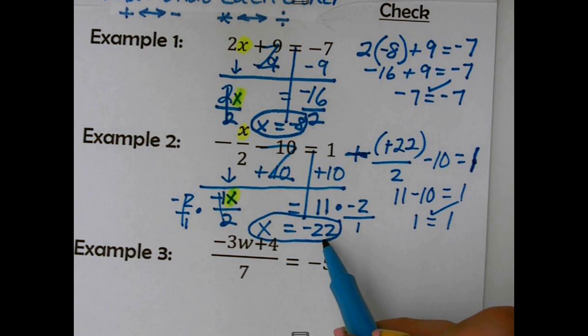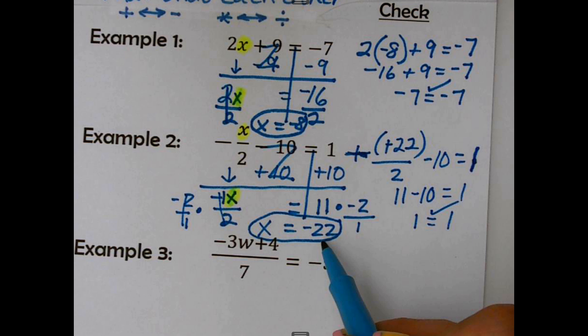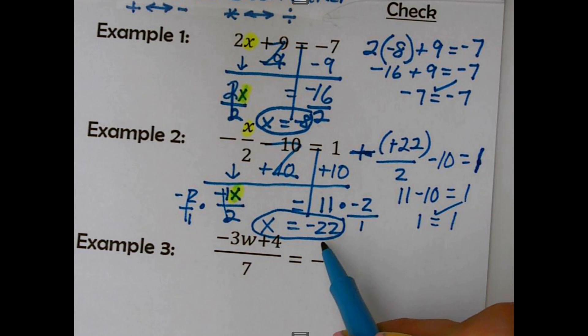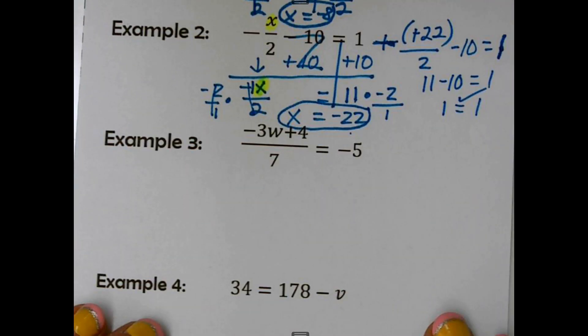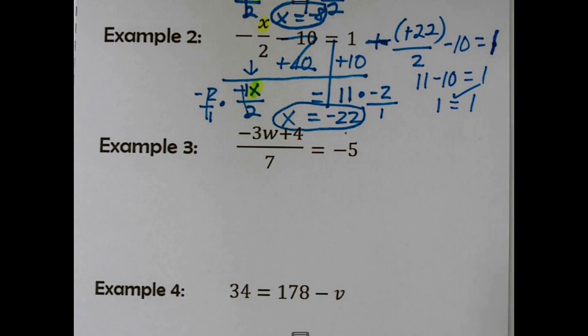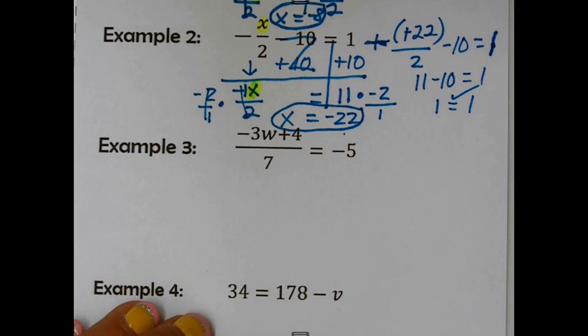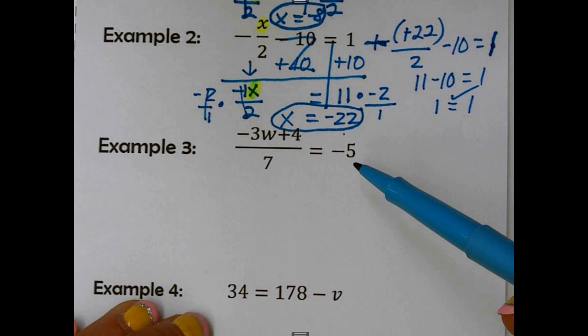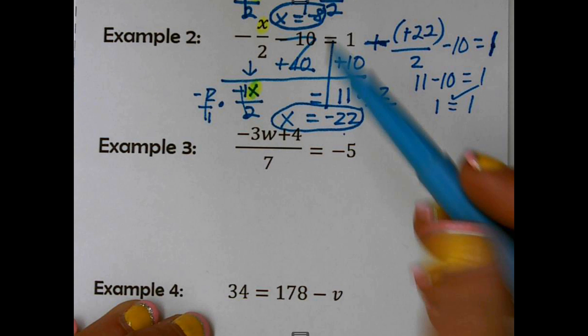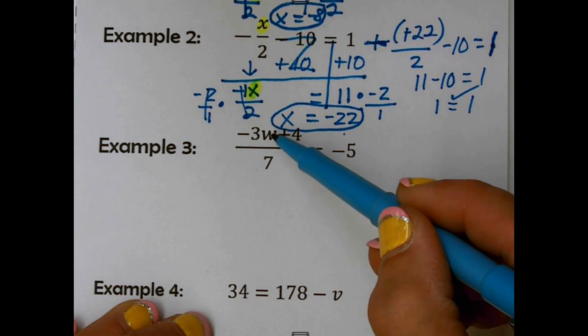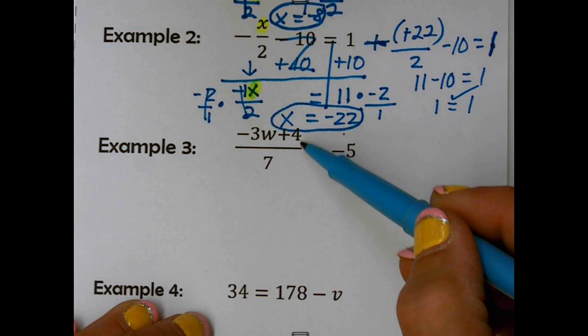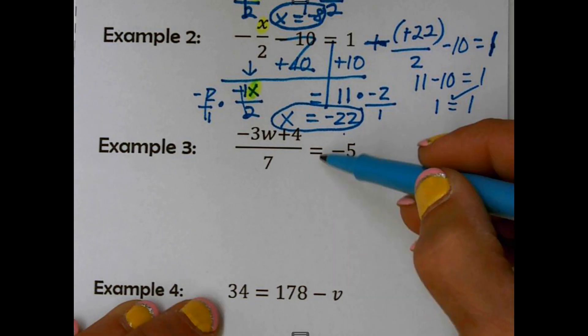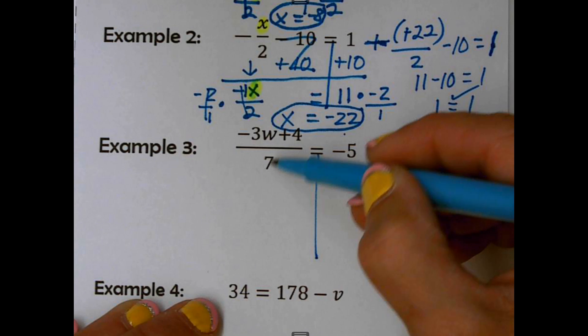All right. This next one, it's actually a three-step. Sorry about that. But I just want to give you an example of something like this. If I were to say it out loud, negative 3w plus 4 divided by 7. So the last thing I said on this side is divide by 7. Remember, we're undoing it. So I am going to multiply by 7. Both sides. 7 divided by 7 is 1.